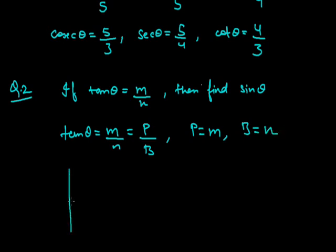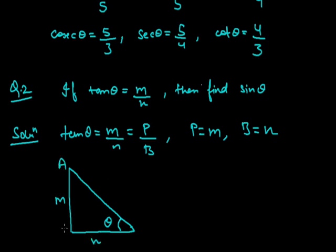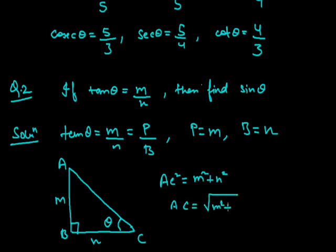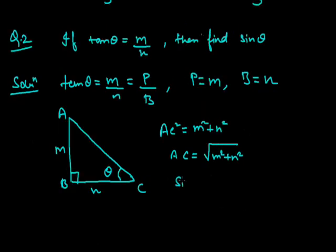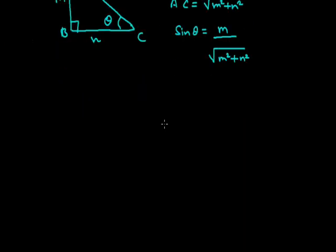Now we will make the right angle triangle and accordingly find the value of sin θ. With perpendicular = m and base = n, we need to find out the hypotenuse. AC² = m² + n², so AC = √(m² + n²). Therefore sin θ = perpendicular/hypotenuse = m/√(m² + n²). If we need to find any other trigonometry ratios, we can also find them using this method.